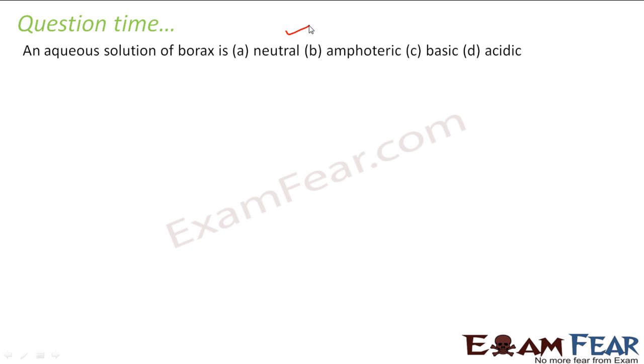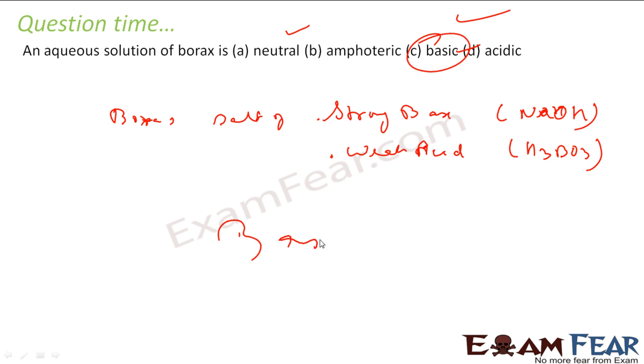The question says the aqueous solution of borax is neutral, amphoteric, acidic, or basic. Borax is a salt of strong base. What is the strong base? It is NaOH and weak acid. What is the weak acid? The boric acid. Salt of strong base and weak acid has to be basic. So it will be basic. Since borax is the salt of strong base and weak acid, it has to be basic.